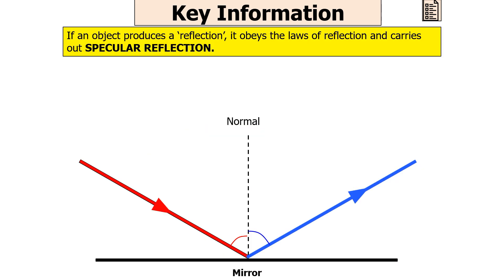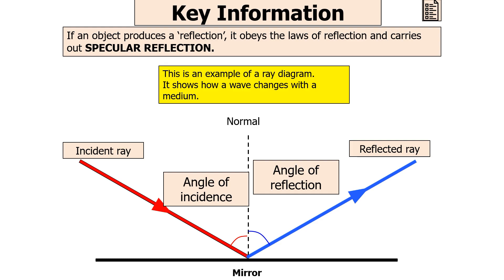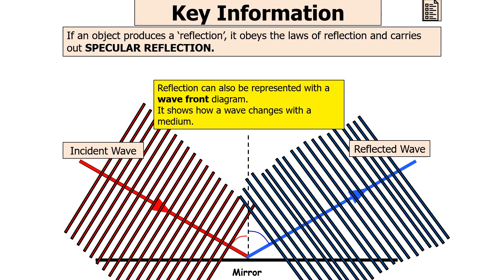If an object produces a reflection it obeys the laws of reflection and carries out specular reflection. In a ray diagram you have your incident ray, which forms the angle of incidence, and your reflected ray, which forms the angle of reflection. A ray diagram shows how the wave changes at a medium. Reflection can also be represented with a wavefront diagram, which again shows how a wave changes at a medium.